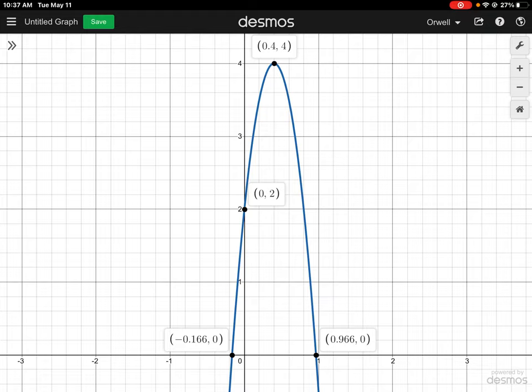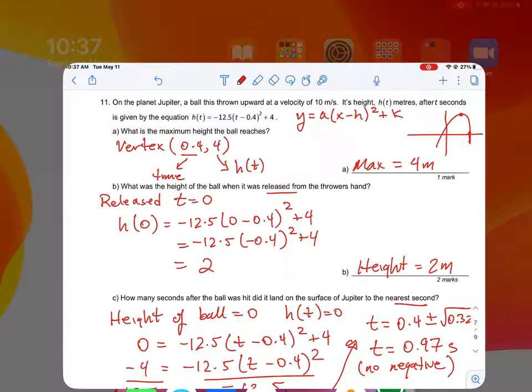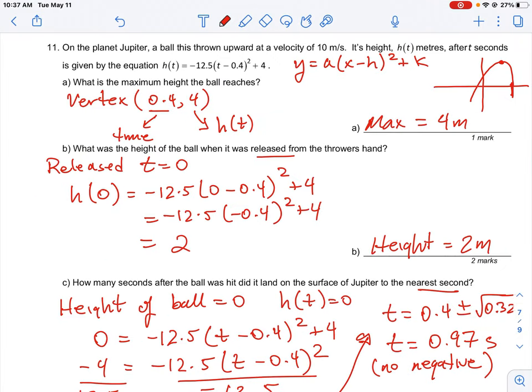So those are the three values that you can get directly from the graph if you understand what that parabola is telling you as it moves through. So just either way you can do it, there are two ways to do it. You can do it directly from a graph, or you can just go back and do it directly from the equation and just start working through the math. So that's how I would look at this question, and hopefully that clears up any questions you have about it.